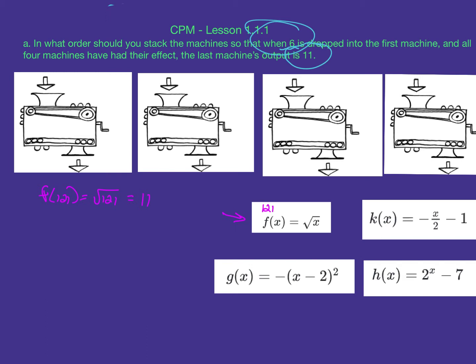Looking at h(x), it's 2^x minus 7, so I'd get an odd number. For k(x), I'd have 121 over 2, giving me a weird fraction. If I have 121 in g(x), I'm ending with 11, so that's probably not going to work. My instinct was to start here with 6 and hopefully lead to the other equations and end with F of 121.